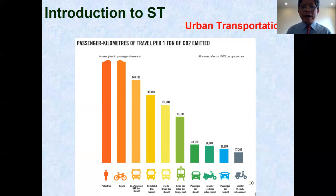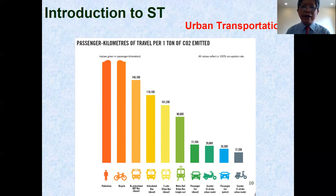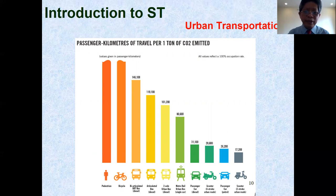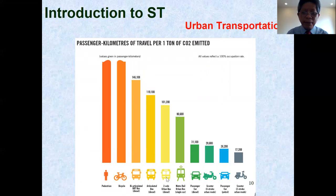One of the main parts in transport in general is urban transport, because in a city there is a very high population density and therefore very high demand for traveling. This figure shows the comparison of different kinds of traffic modes based on passenger kilometers of travel per ton of carbon dioxide emitted to the atmosphere. The different traffic modes include pedestrian, bicycle, articulated bus, mass transit, and metro rail.